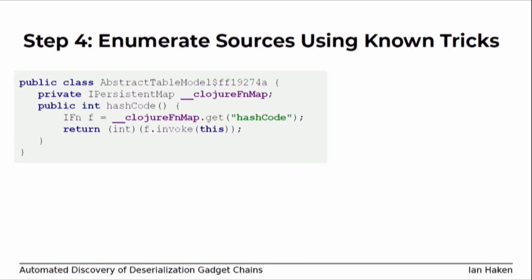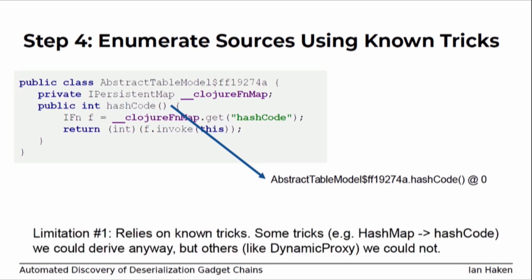Step four is enumerating known entry points — basically just using all the known tricks researchers have come up with over the last few years to figure out how to get into interesting gadget chains. For example, we see this hashCode method overrides object.hashCode, so we enumerate it as an entry point. This does highlight one limitation: it relies on known tricks. There are other clever tricks researchers have come up with, like wrapping things in a dynamic proxy where that calls InvocationHandler.handleInvocation, that we wouldn't be able to derive. So there's room for more gadget chains that this might miss.